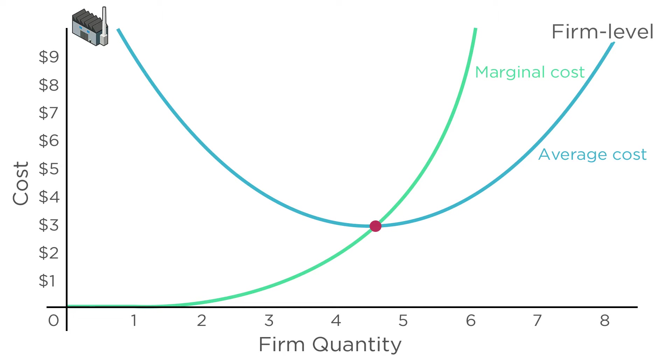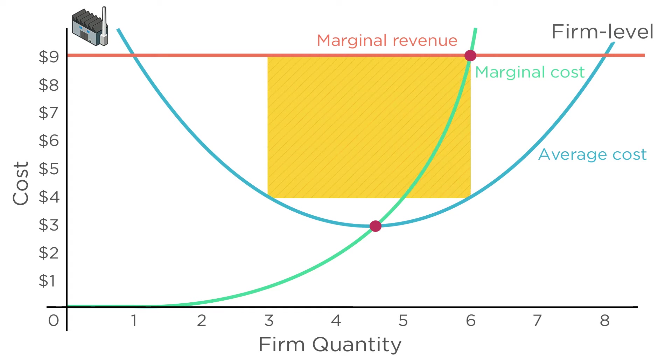In a perfectly competitive market, marginal revenue is a horizontal line at the market price. We showed that a firm produces at the point where marginal cost crosses marginal revenue. If the price is above average cost, the firm makes a profit, represented by this rectangle. If the price is below average cost, the firm is losing money and will shut down in the long run.